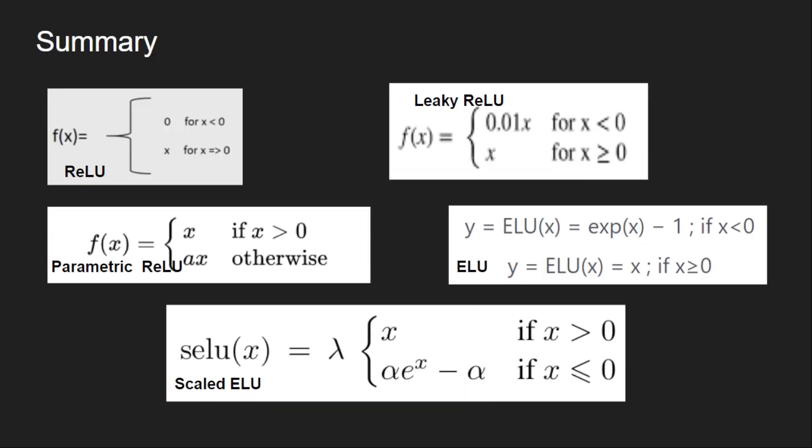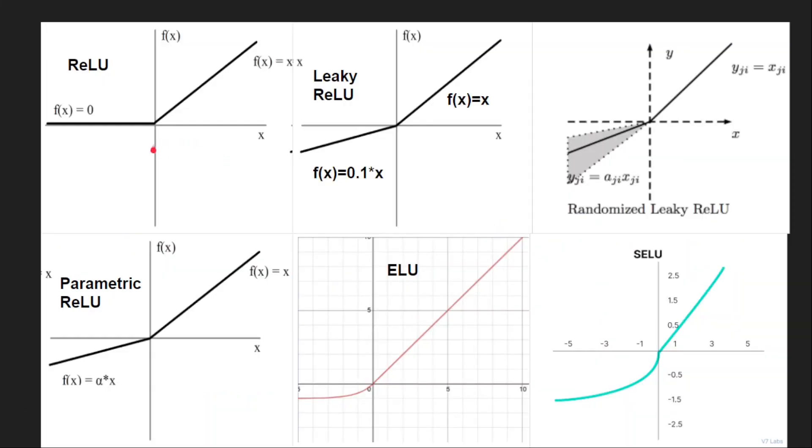So these are the different variants of ReLU and this is the summary of all those. If you see this is ReLU, leaky ReLU, parametric, ELU and scaled ELU. So these are the formulas for this and here are the graphs for all those. So if you see here except ReLU all of these have some portion of output for the negative inputs. So all of these don't have dead neurons problem.